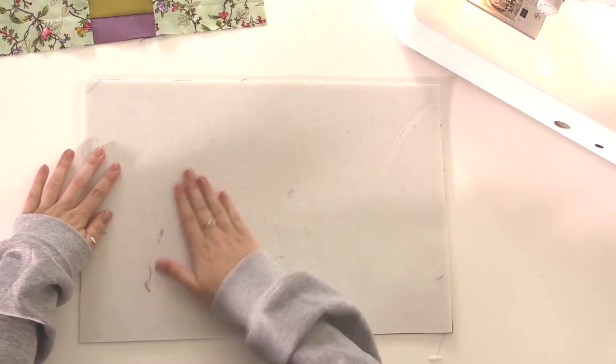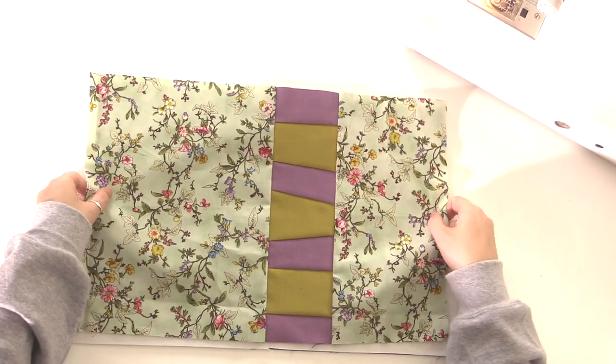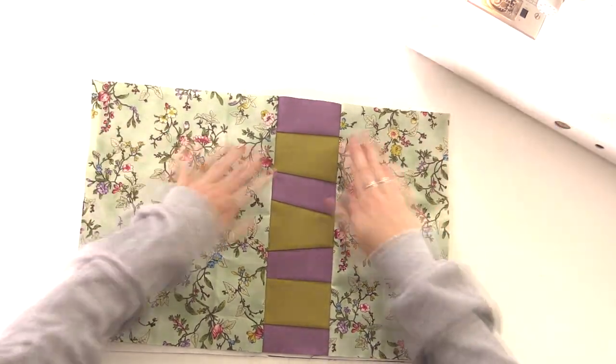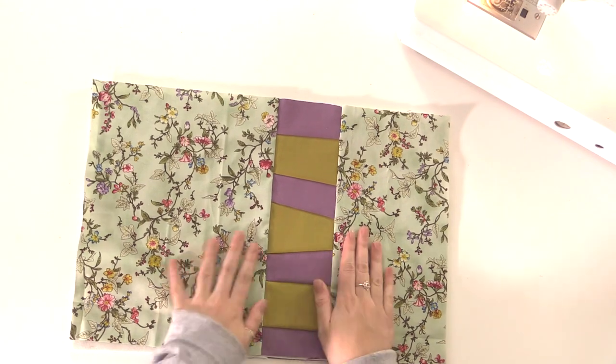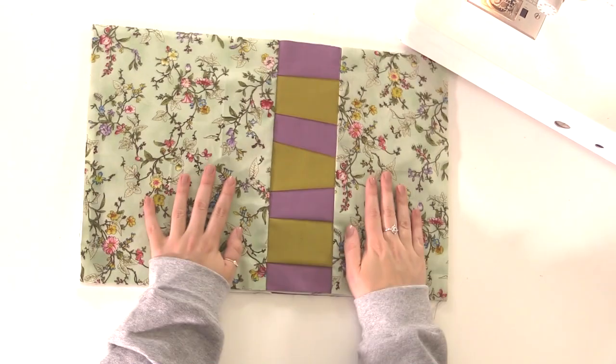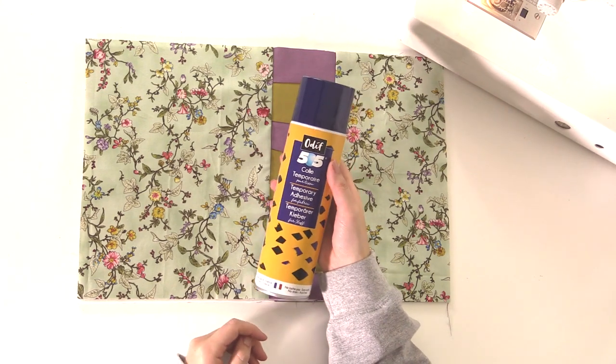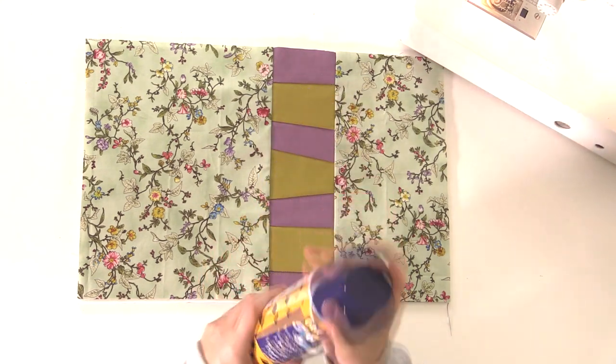So turn the back over and then place the top of your mat on top. I'm just going to spray this in place with some 505 spray, just so it doesn't move.